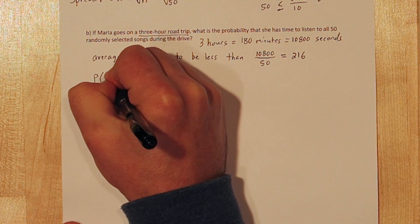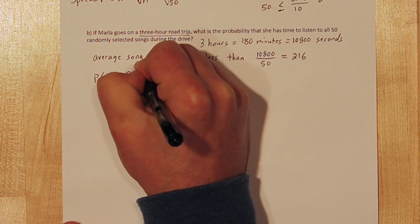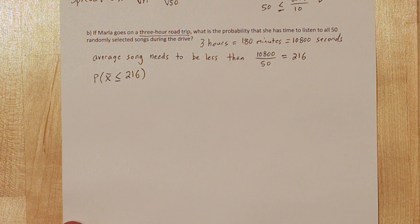So now we need to calculate the probability that our average song length of the 50 songs, X bar, is less than 216 seconds.